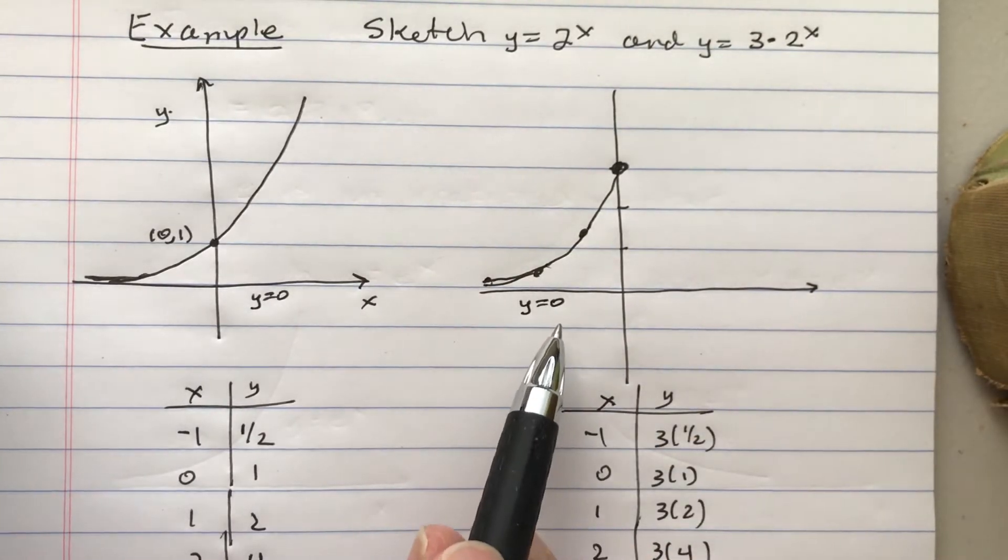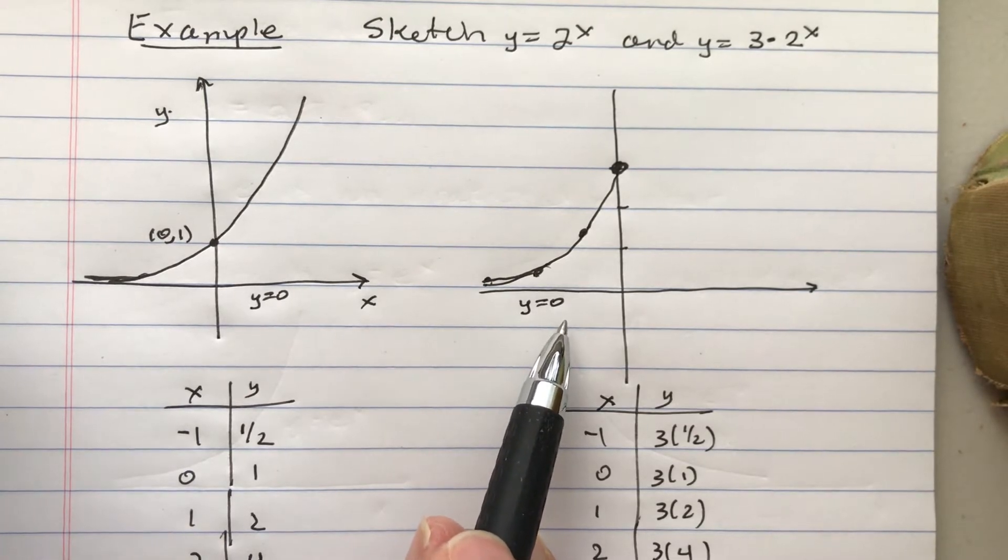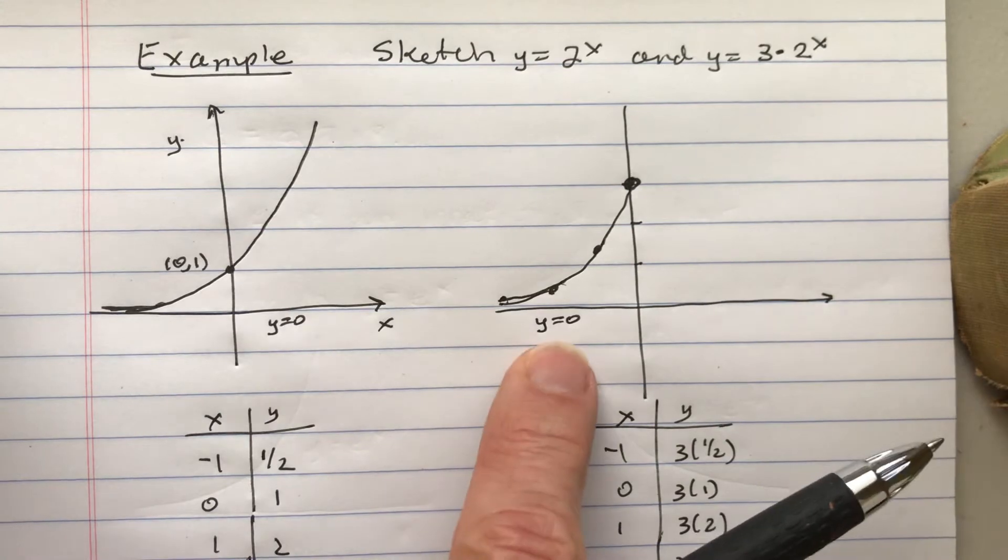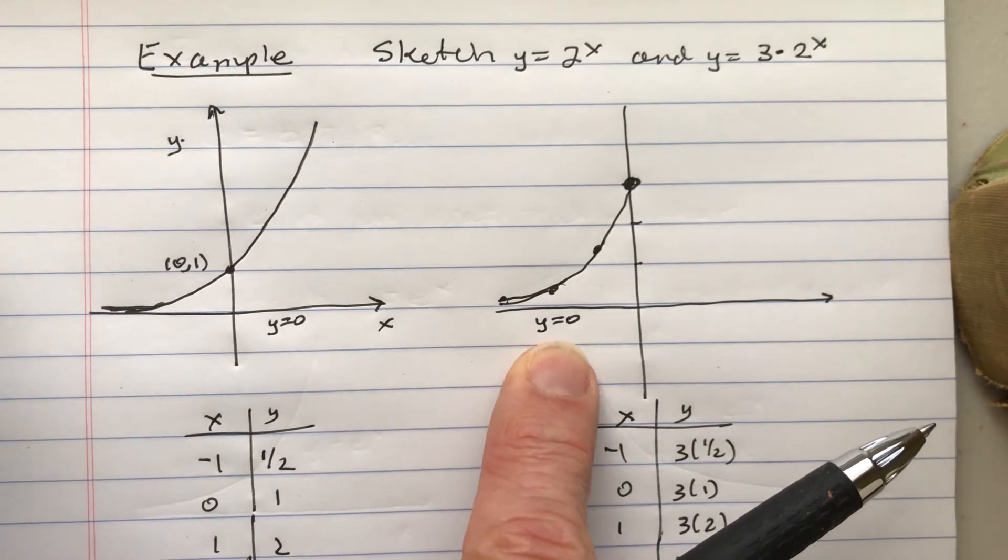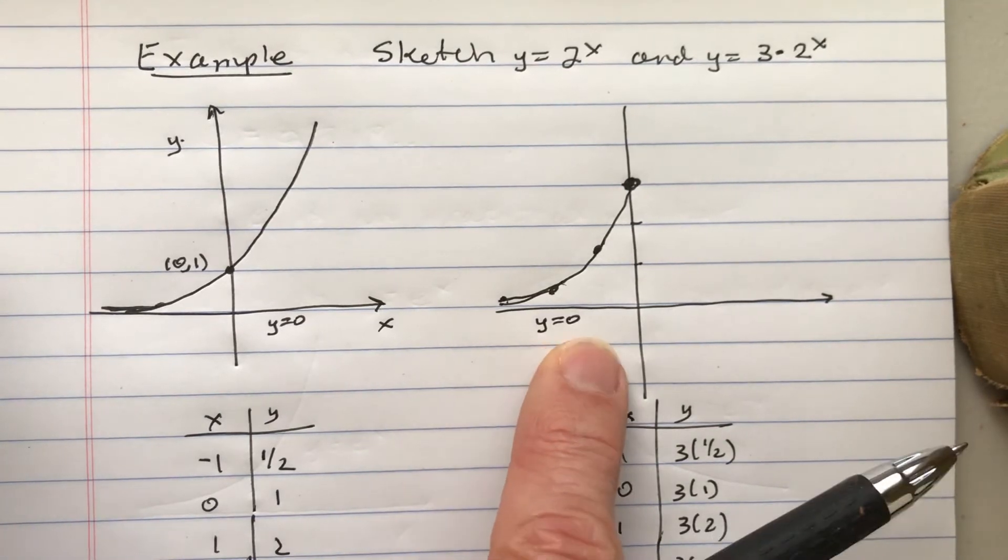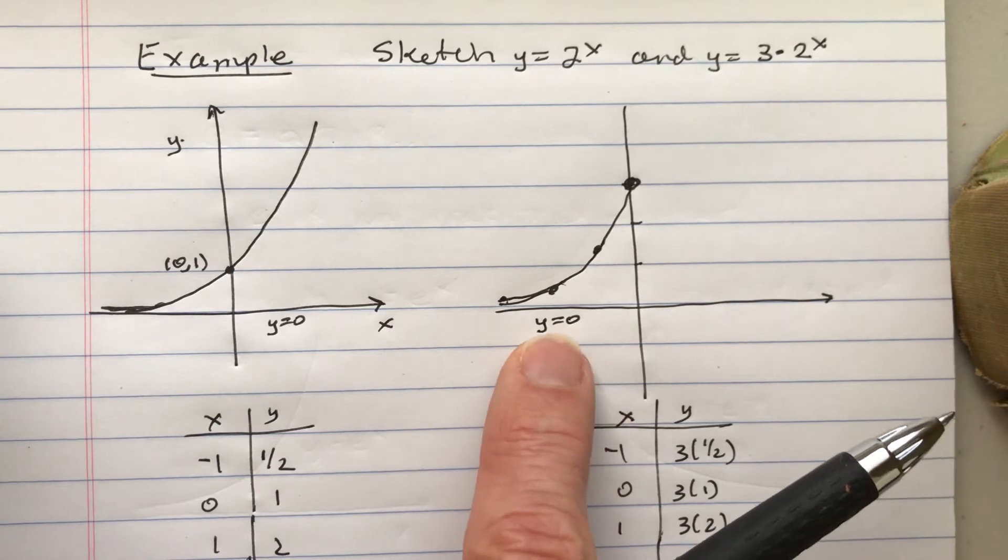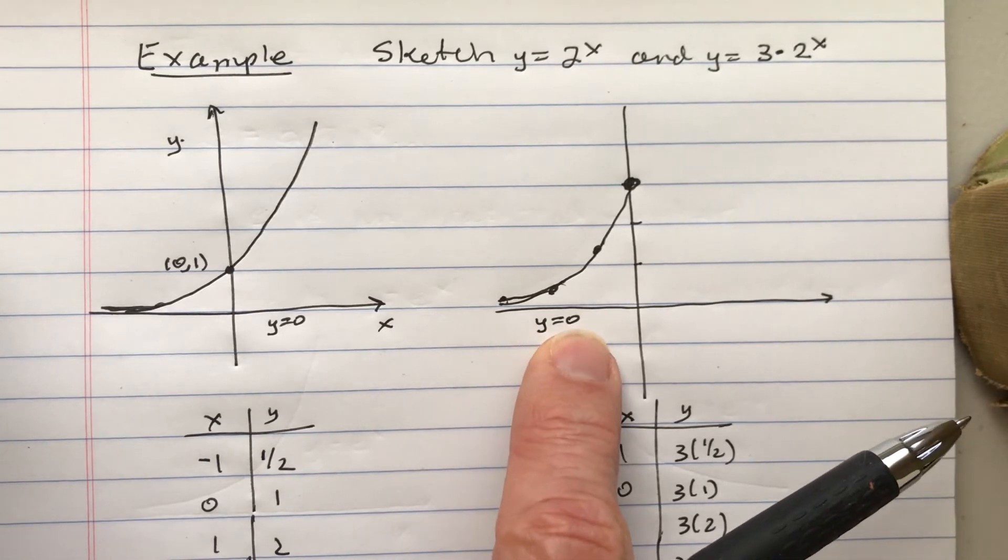The horizontal asymptote has an equation y equals 0. You can think of it as that sort of a memory device of saying, I multiply everything by 3. If y equals 0, you multiply by 3 and you still get 0.